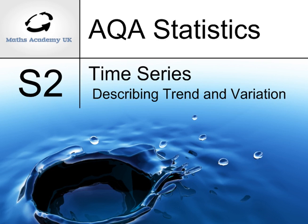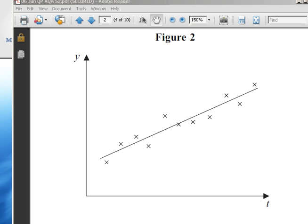Time series describing trend and variation. In this graph, this solid line is the trend line, and clearly we can see an upward linear trend. The points are scattered randomly around the line, so we see random variation.